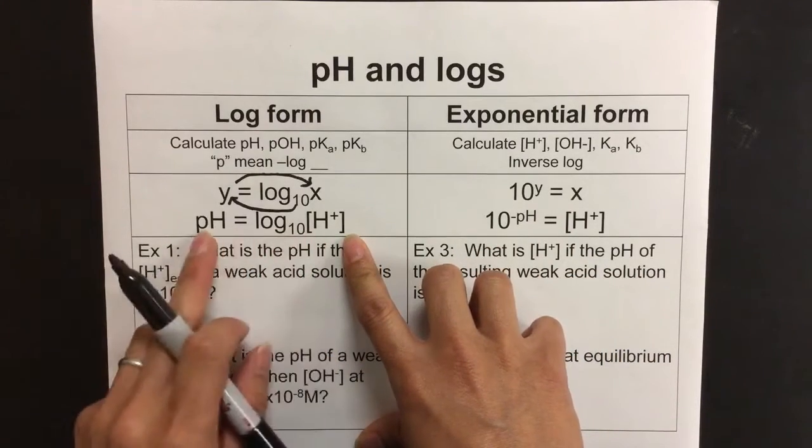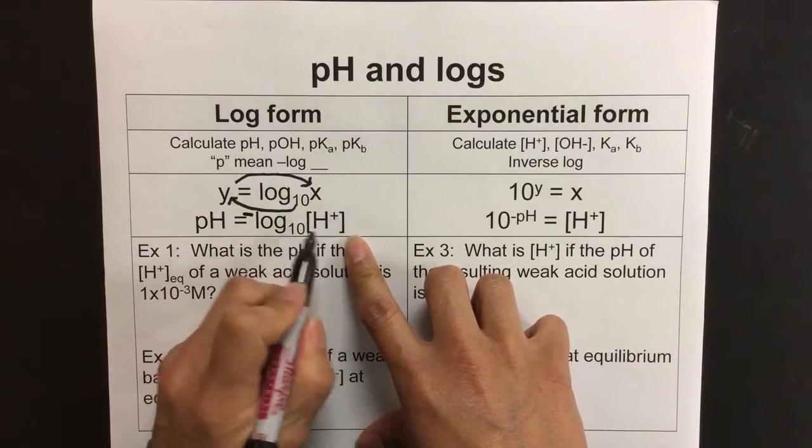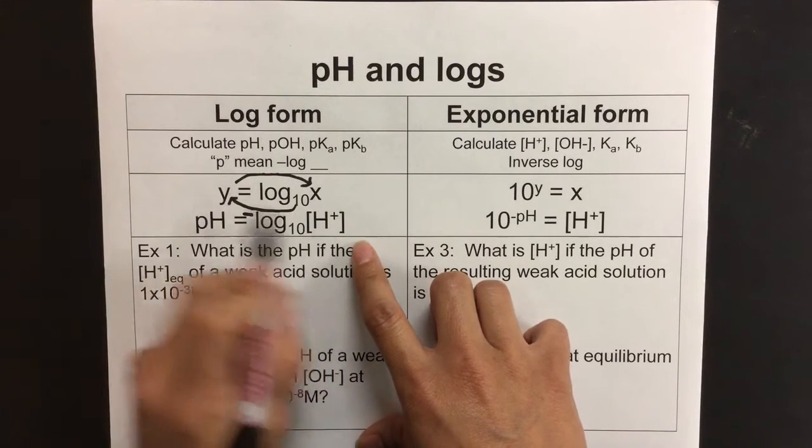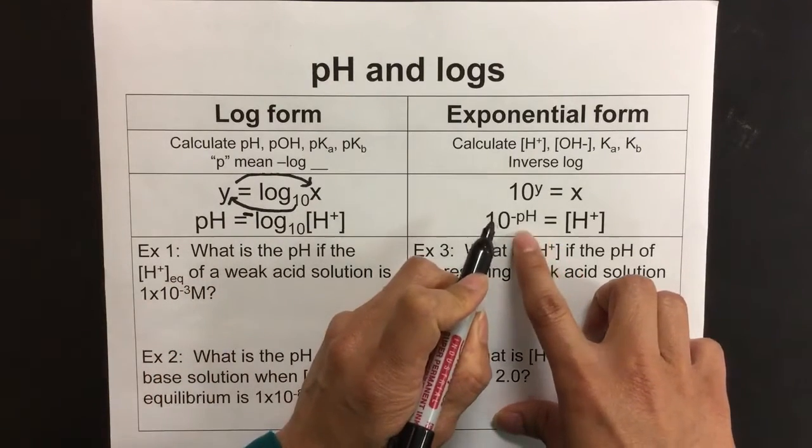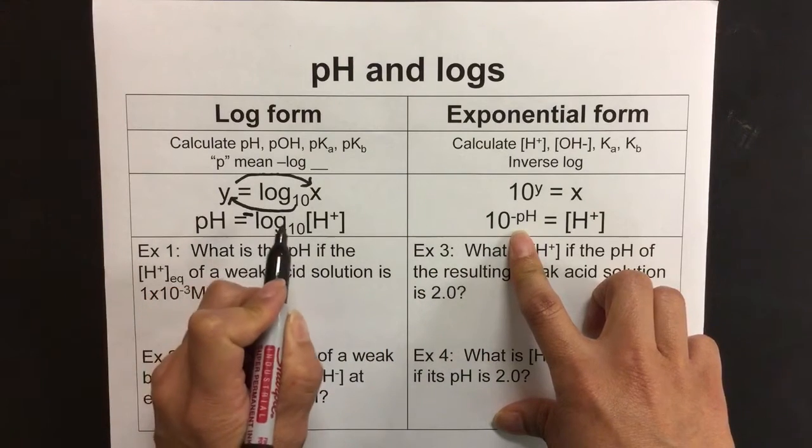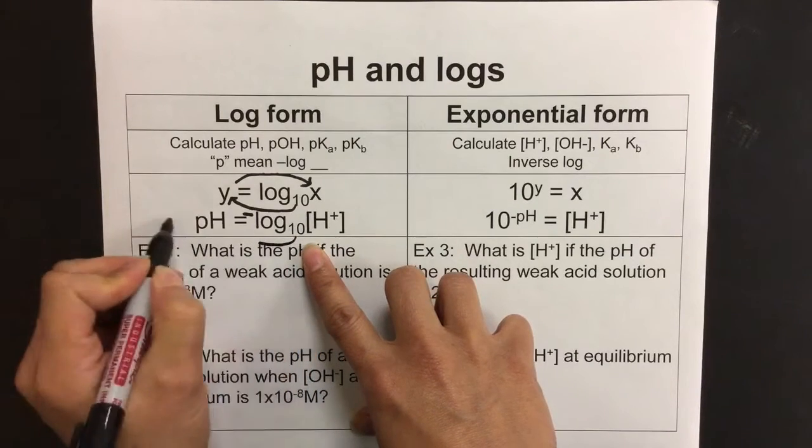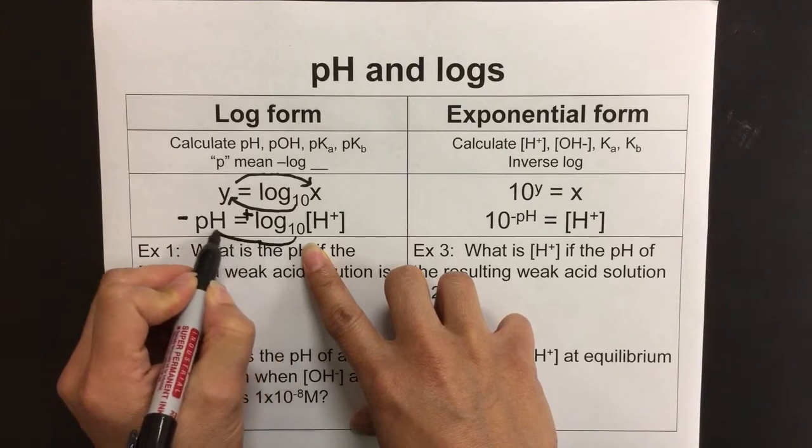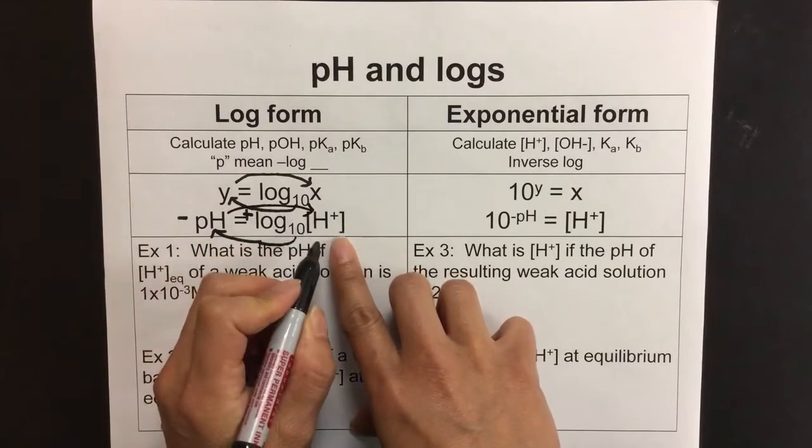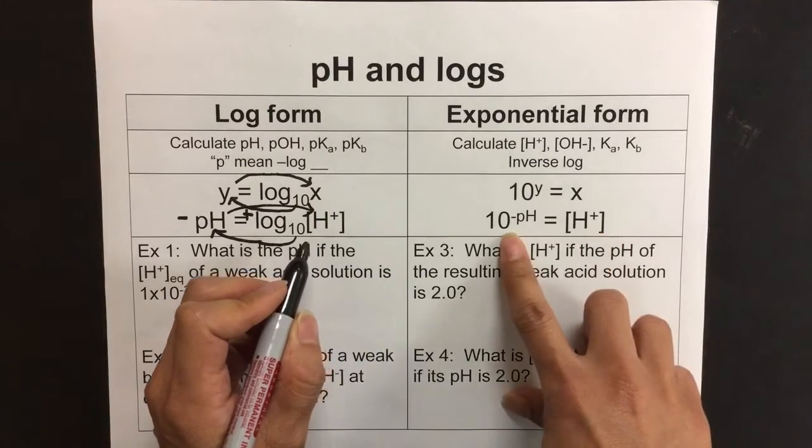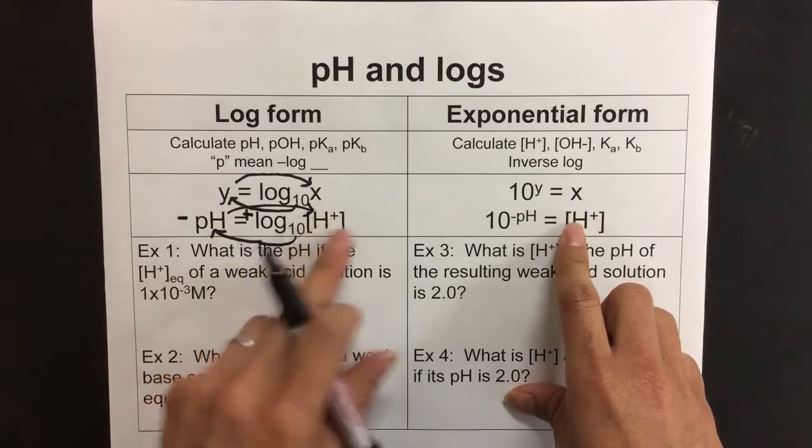pH is defined here as pH is negative log of base 10 times H, or of the H+ concentration. Oftentimes the pH is given at equilibrium, so it's a resulting solution at equilibrium. If I wanted to convert that pH into log form and solve for the H+ concentration, I bring the negative over so this becomes positive, and then I bring it to the power of 10 to the negative pH, and that will equal the H+ concentration. So H+ equals 10 to the negative pH. That's turning our log form into exponential form so that we can solve what's in that log function.